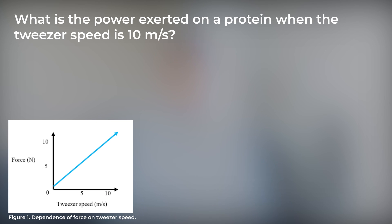And then let's say the question reads, what is the power exerted on a protein when the tweezer speed is 10 meters per second? A, 100 watts, B, 50 watts, C, 25 watts, or D, 15 watts.